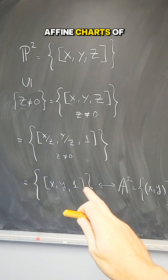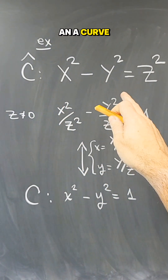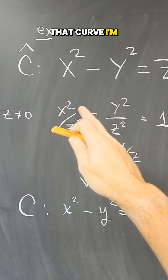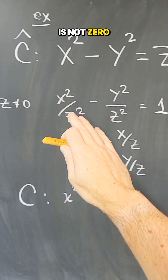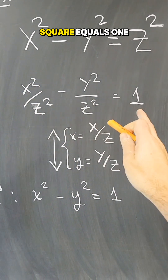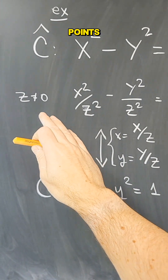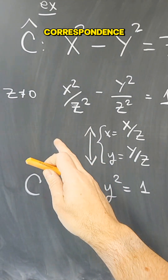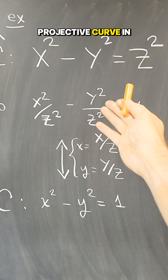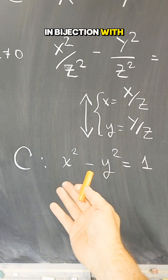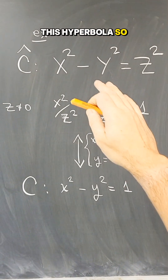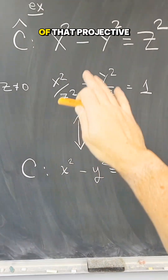Now we're going to use that to find affine charts of curves. Start with a curve in projective coordinates given by a homogeneous polynomial in three variables. Take the chart z is not zero, and since z is not zero I can divide through by z squared and get x² minus y² equals 1. The points on that chart are in bijective correspondence with points on the affine plane, so the points on the projective curve in this chart are in bijection with the points on the affine curve x² − y² = 1, which is a hyperbola. So this projective curve has this hyperbola as an affine chart.